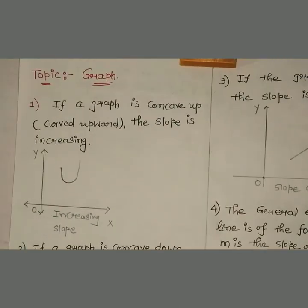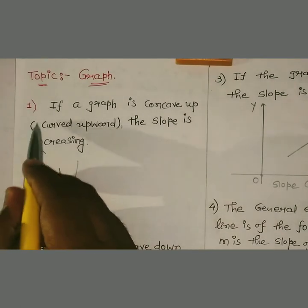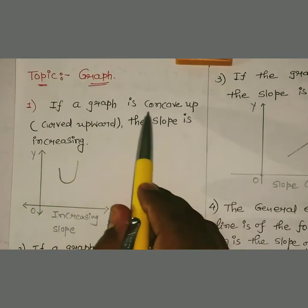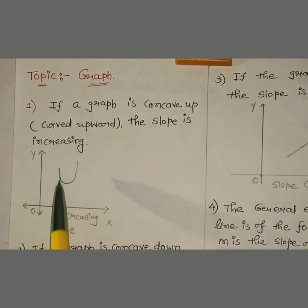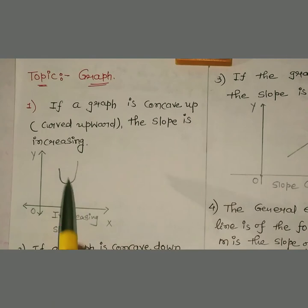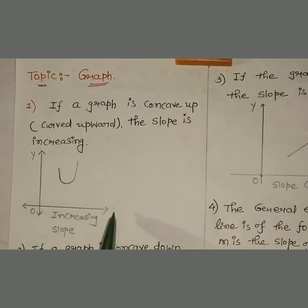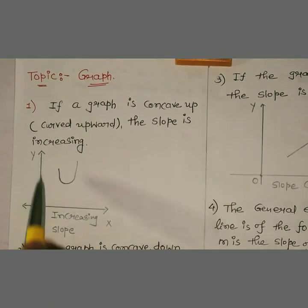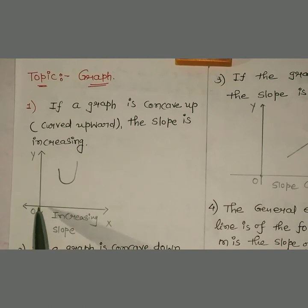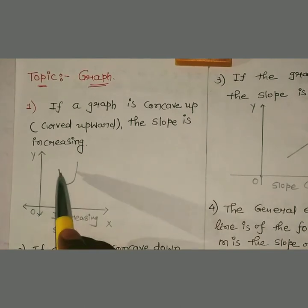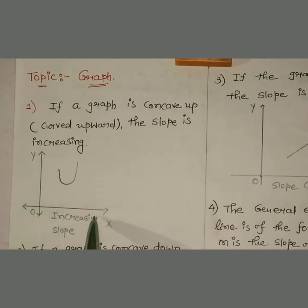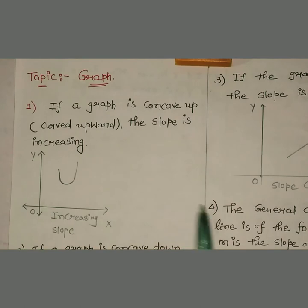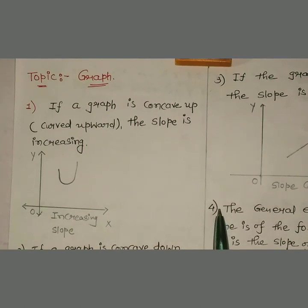Starting with our first graph: if a graph is concave up or curved upward, the slope is increasing. यहाँ पर जो आपका graph है, this is your x-axis, this is your y-axis, here this point is your origin. If it is concave up तो यह आपका increasing slope हो गया, मतलब यहाँ पर increment दिख रहा है।